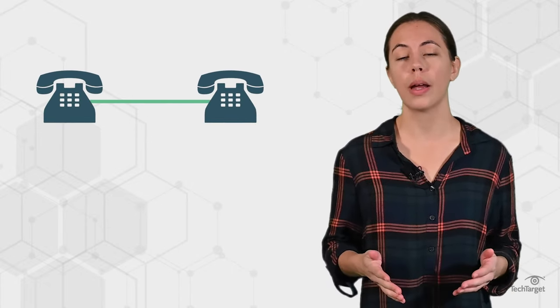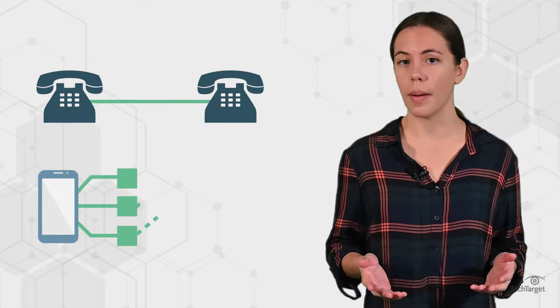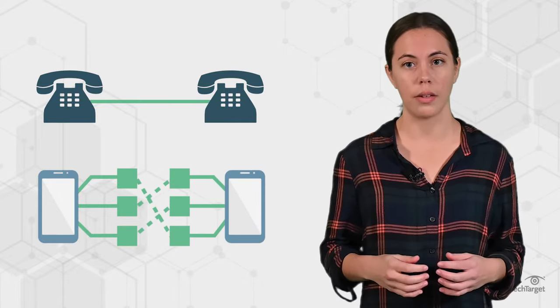Circuit-switched networks have a dedicated connection between two endpoints in a network, while packet-switched networks break down messages into small data packets and move them based on the destination of the individual packet.